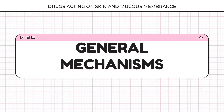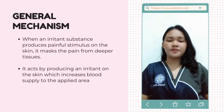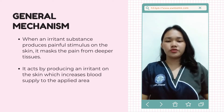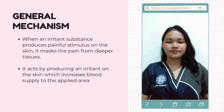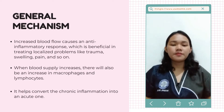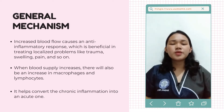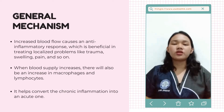Next is the general mechanisms of counter-irritants. When an irritant substance produces a pain stimulus on the skin, it masks the pain from deeper tissues. It acts by producing an irritant on the skin which increases blood supply to the applied area by dilating the vessels. Increased blood flow causes an inflammatory response which is beneficial in treating localized problems like trauma, swelling, and pain. When blood supply increases, there will also be an increase in macrophages and lymphocytes. Lastly, it helps convert chronic inflammation into an acute one.